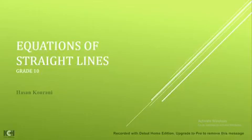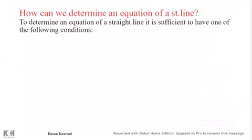an equation of a straight line, and the second is how can we transform equation of straight line from one form to another—from the reduced to standard to parametric and vice versa. The first point is how can we determine an equation of a straight line.